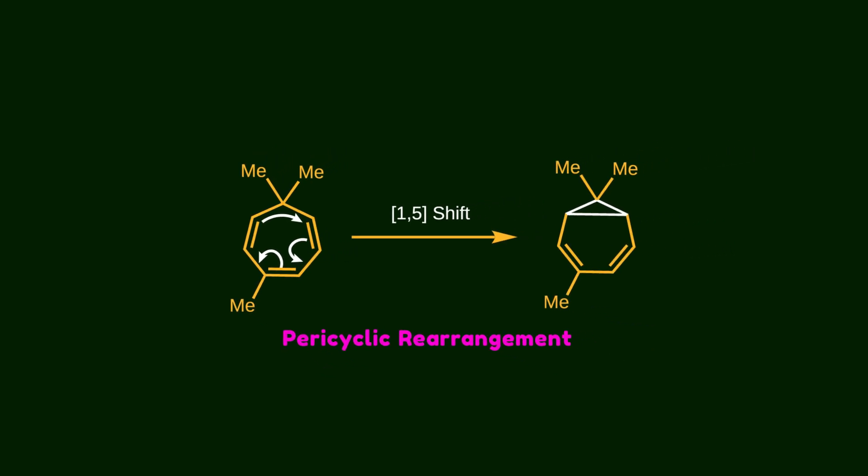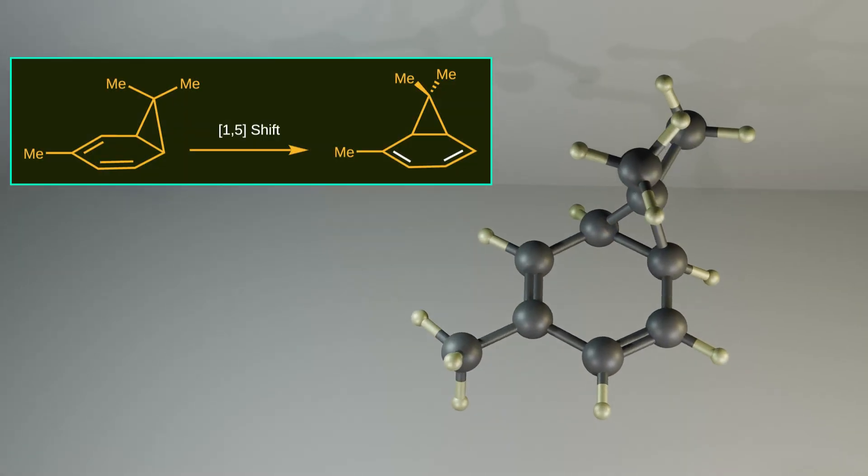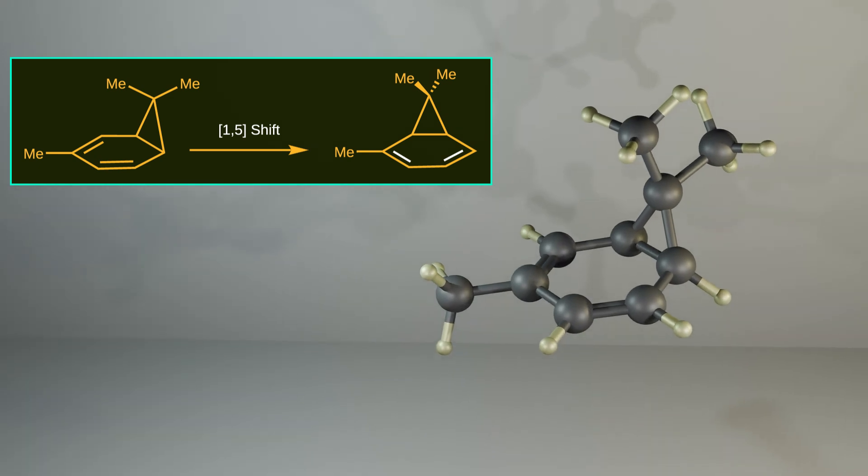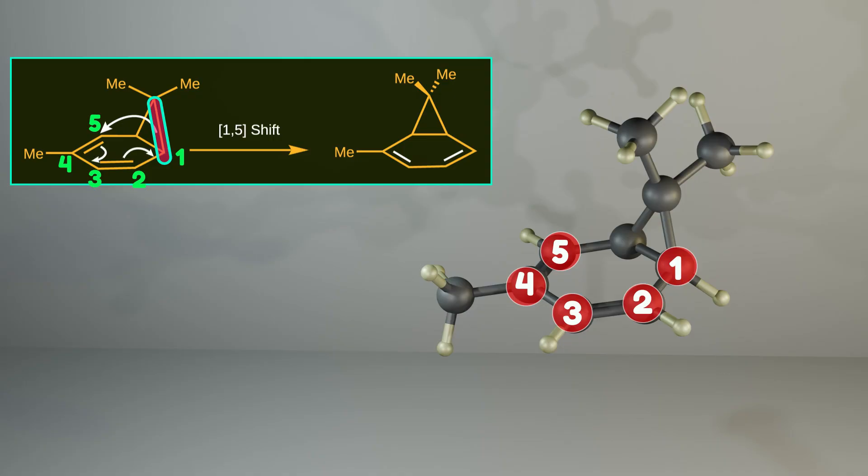This critical intermediate is called norcaradiene. Now it's time for a 1-5 sigmatropic rearrangement. Notice that this carbon atom bearing 2 methyl groups is gonna migrate. So this carbon-carbon bond should be cleaved, shift its position and attach to 5th carbon atom through the conjugated pi system, along with repositioning of the double bonds. Keep in mind we consider a longer path for this type of migration when a conjugated pi system is involved.